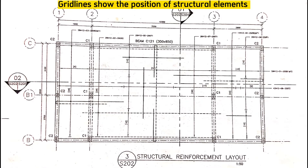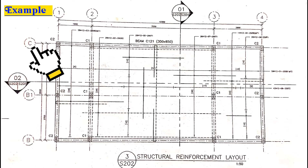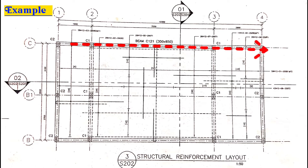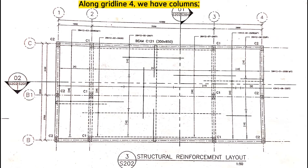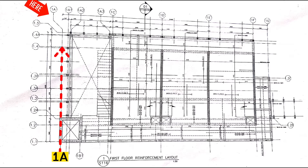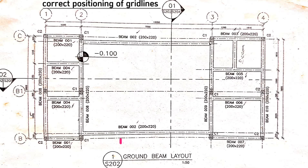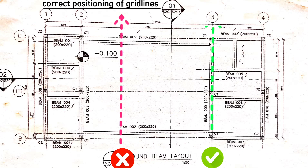Grid lines show us that there is an element along a given line. For example, grid line C alerts us that there are elements along it — in this case we have column C2 along grid line C, column C1 here, and column C2 here. Along grid line 4, we have column C2 at multiple positions. Similarly, grid line 1A shows the center line of the lift shaft wall, and grid line 1.1 is also shown. We cannot position a grid line where there is no element, but we can position one where a series of columns runs along that line.